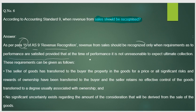Performance satisfied means the goods sold must be satisfactory to the buyer. If it is unreliable, it should be rejected. If it is unreasonable to expect ultimate collection from the sale, it should not be considered revenue. There are two key requirements for recognizing sales revenue.